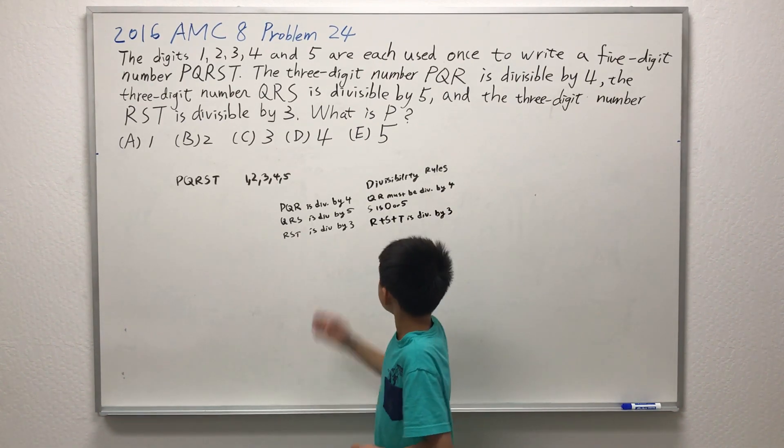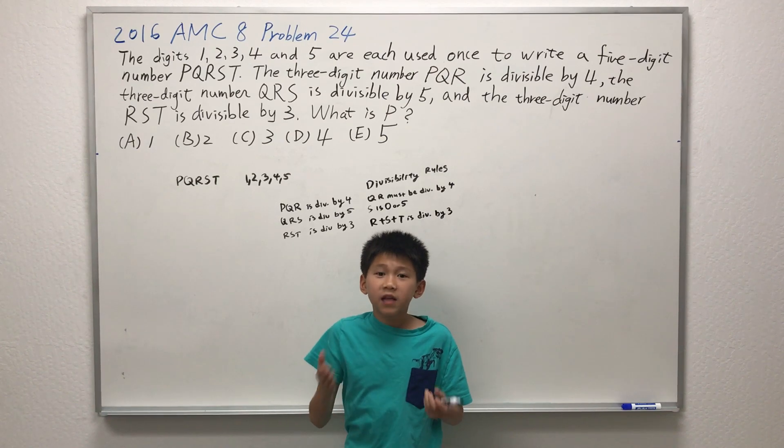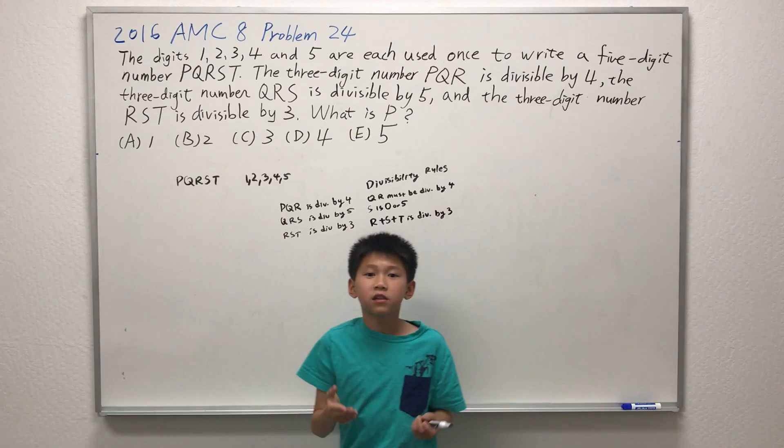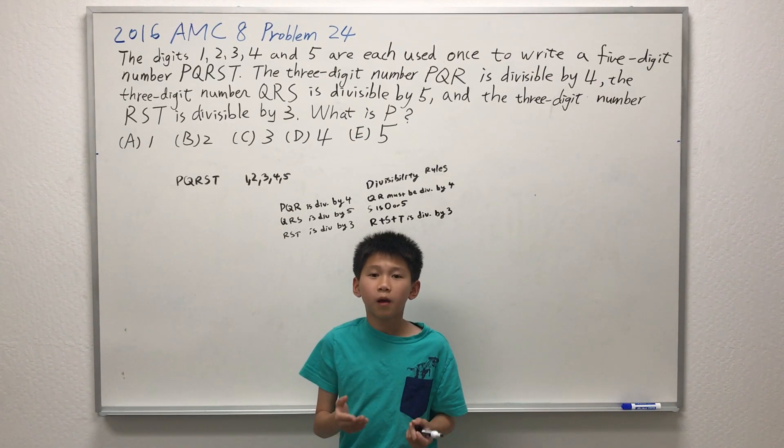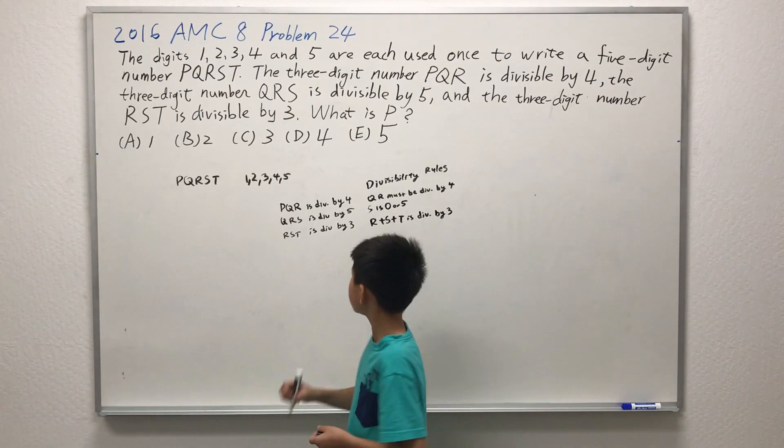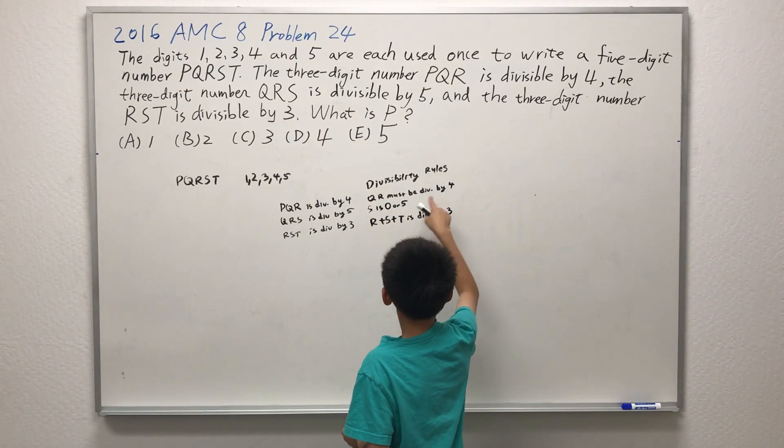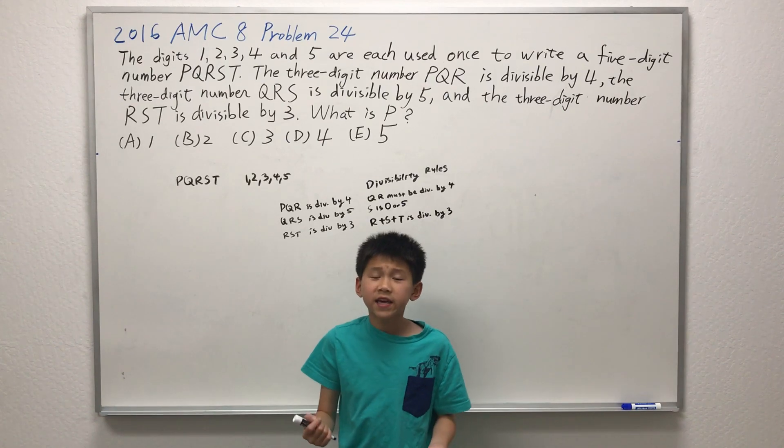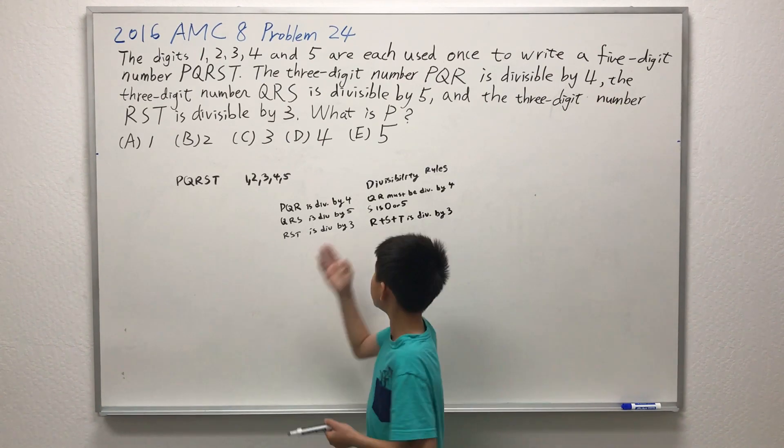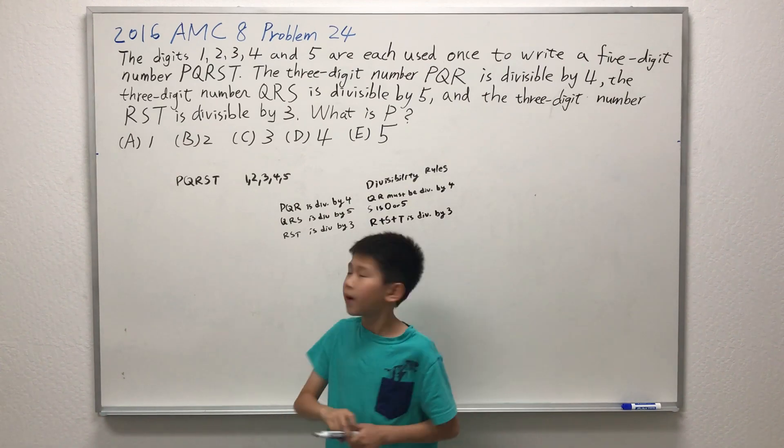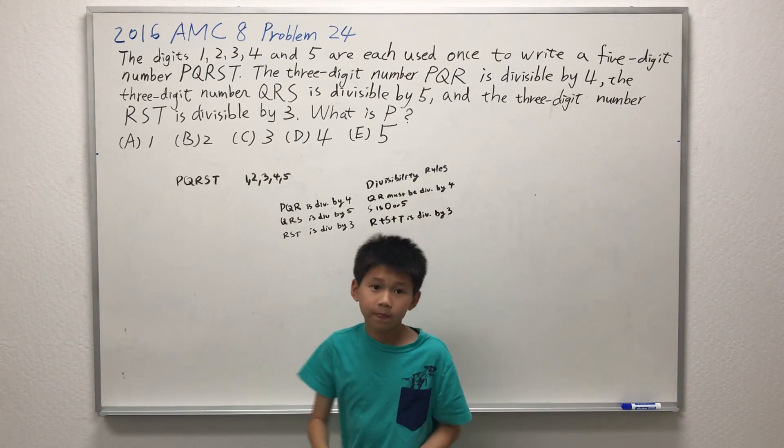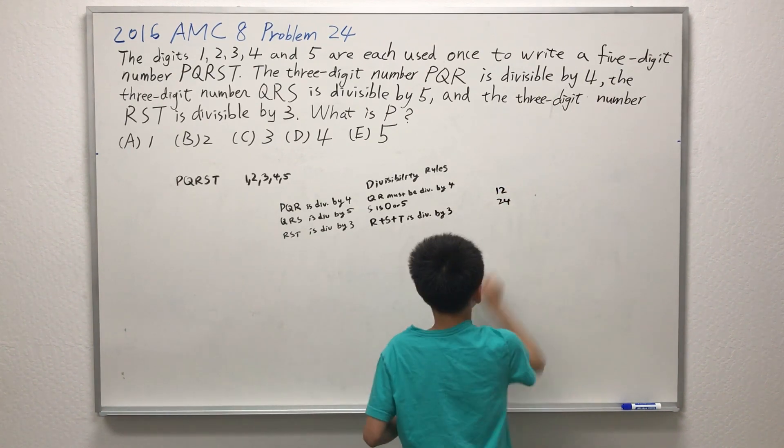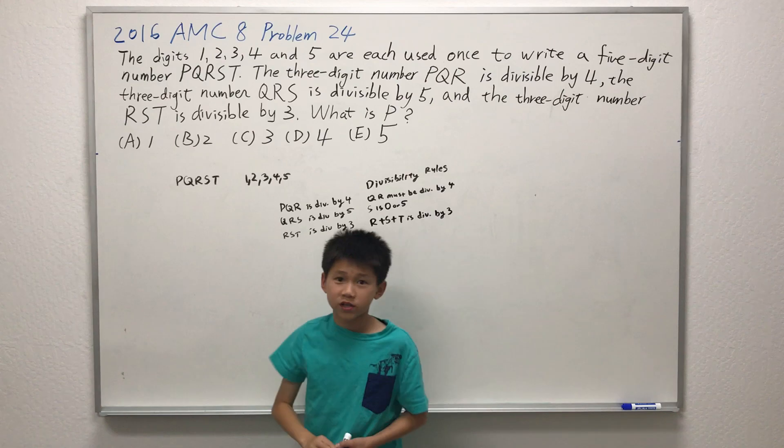So there we have it. We have the divisibility rules. Now the plan of attack is to just check each of the criteria and see if we can eliminate some of them to make the problem easier. Let's try the first criteria. QR must be divisible by 4. There are too many cases to consider at this point because we have no idea whatsoever about what are the values of QR. It can be 12, it can be 24, it can be so many cases.